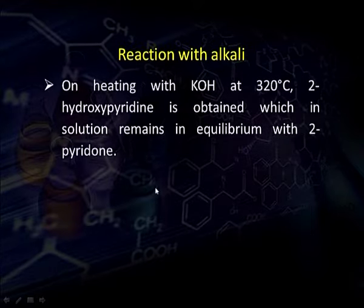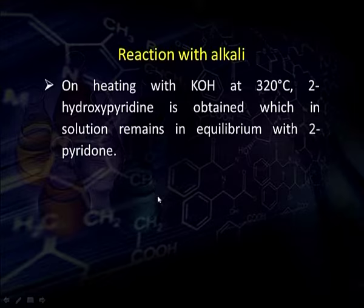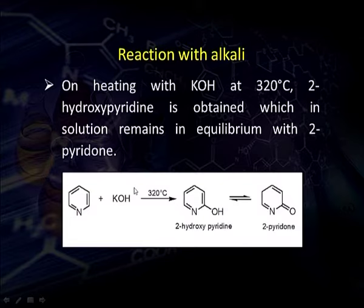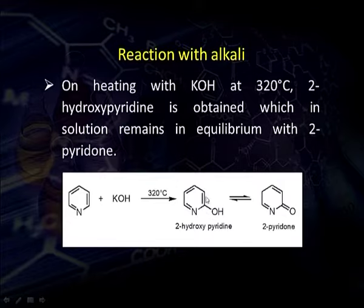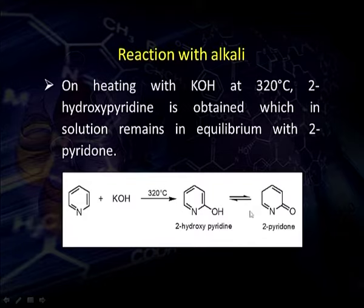Reaction with alkali: when pyridine is heated with an alkali such as KOH or sodium hydroxide at 320°C, 2-hydroxypyridine is obtained. The hydroxide ion (OH−) acts as the nucleophile and gets attached at position 2 since nucleophilic substitution takes place at that position. However, this 2-hydroxypyridine is in equilibrium with its tautomeric form, 2-pyridone. These two forms remain in equilibrium in solution and are tautomers of each other.